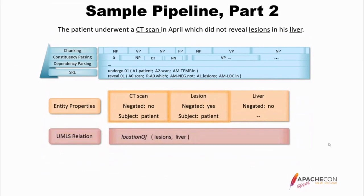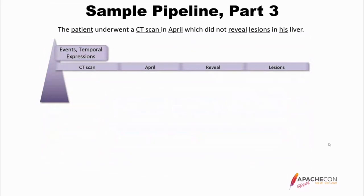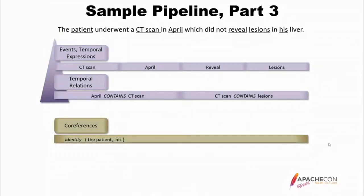We can also get UMLS relations. For instance, in this case we're getting the location of the lesions being at the liver. We can also get events and temporal expressions — the CT scan is an event, April is a temporal expression, and 'reveal' and 'lesions' are more events. We can get relations between these events and times: April contains the CT scan, and the CT scan contains lesions. Co-references are when something in the sentence refers to the same real-world object — in this case, 'the patient' is the same as 'his.'